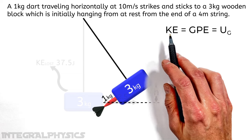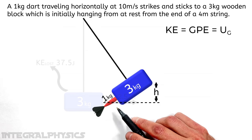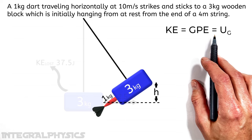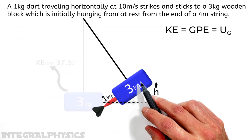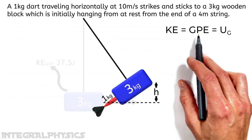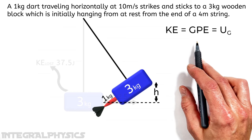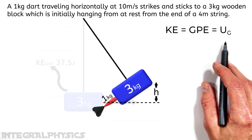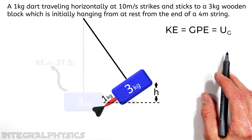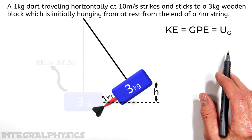So up here we can set the kinetic energy just after this collision equal to the gravitational potential energy when the block reaches its maximum height. Now some people refer to this as GPE for gravitational potential energy. In other texts, you'll see it written as U sub G. They both mean the same thing. And they're calculated the same way.